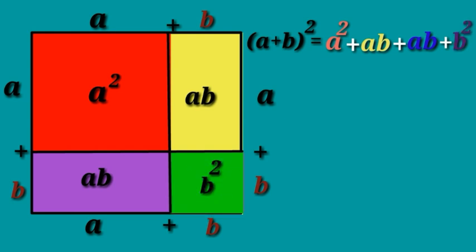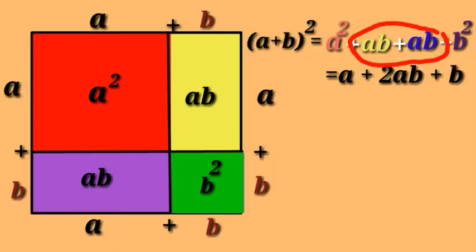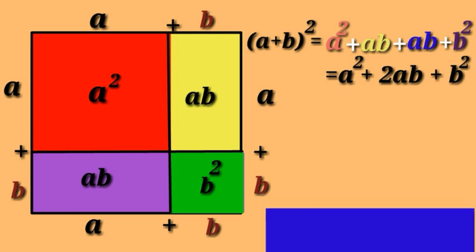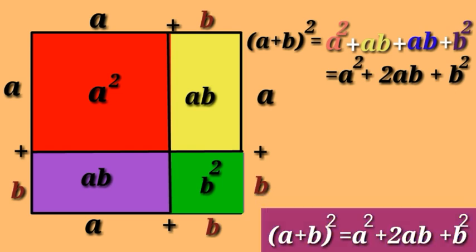This is equal to a² + ab + ab + b². Now, see here, we have two ab's. So, a² + 2ab + b².